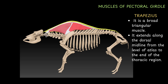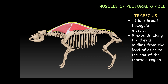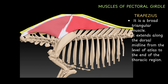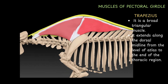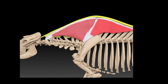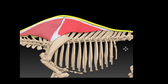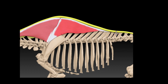So here you can see the atlas. The muscle starts from here and ends in this region, up to the end of the thoracic region. The muscle extends from atlas — so this is the atlas — to the region of the end of the thoracic region. So this is the end of the thoracic region.